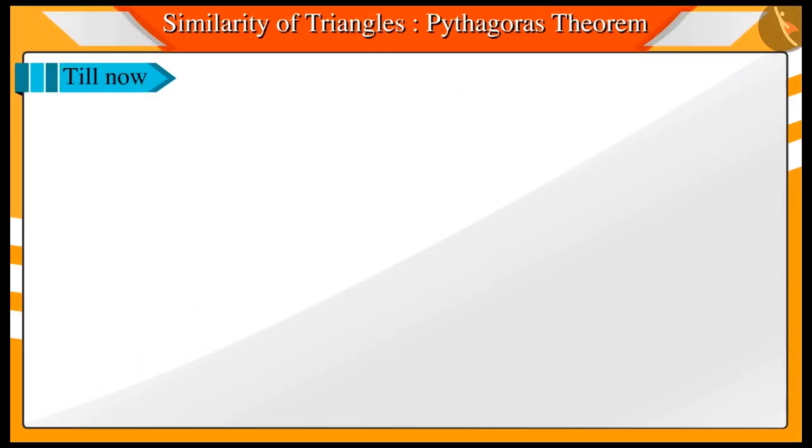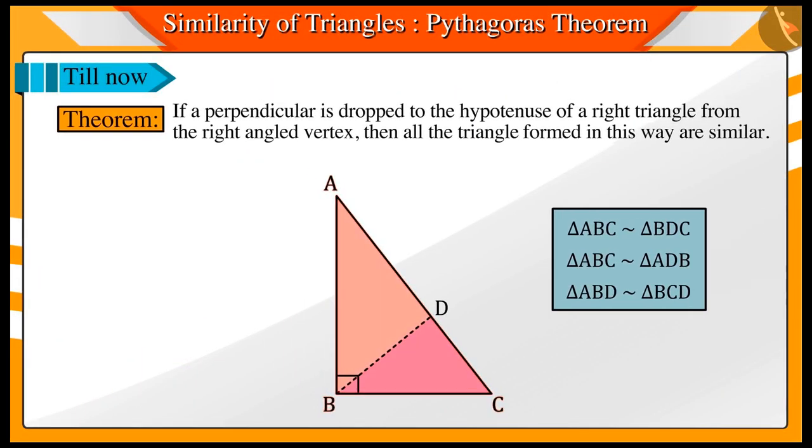Welcome to this video. In the previous video, we learned that if a perpendicular is dropped from the right angle to the hypotenuse of a right-angled triangle, then the triangles thus formed are similar.